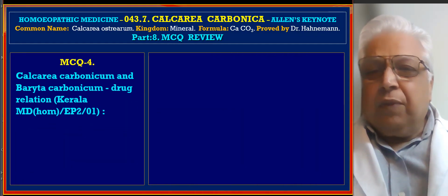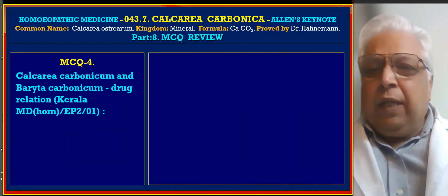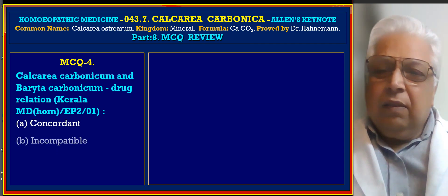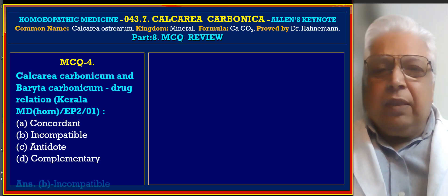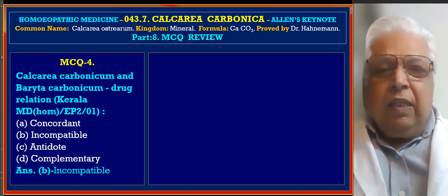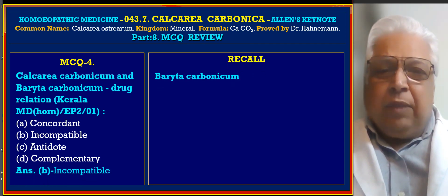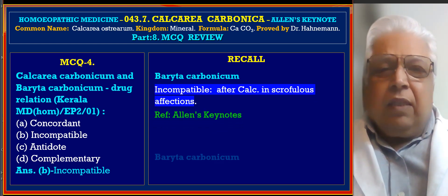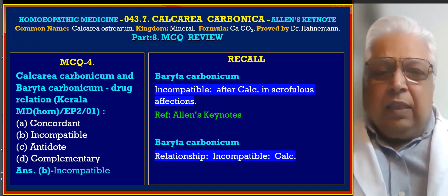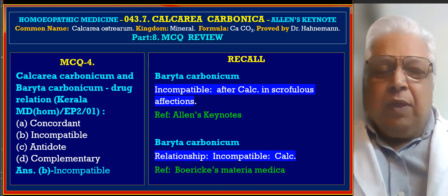MCQ 4: What is the drug relationship between Calcarea Carbonica and Baryta Carbonica — concordant, incompatible, antidote, or complementary? The answer is incompatible. Reference from Allen's Keynote: Baryta Carbonica is incompatible after Calcarea in scrofulous affections. Reference also confirmed in Boericke's Materia Medica.